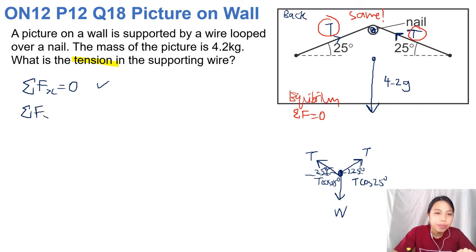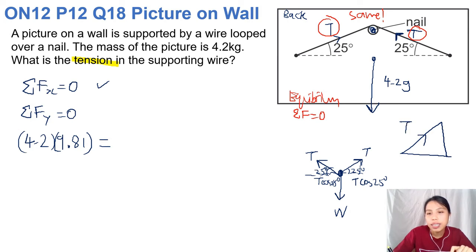How about the vertical? Should also be 0. What's pulling the frame down? Weight. So we have the weight going down 4.2 times 9.81. Anything else? No. Tension is all pointing outwards. So tension, if I zoom in a bit. This is the T. This is your angle. And you have Ty, which is the vertical component of tension. So what's Ty again? Opposite hypotenuse. So sine.